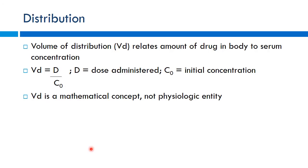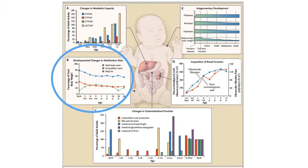Volume of distribution relates the amount of drug in the body to the serum concentration: Vd = dose / initial concentration. This is a mathematical concept, not a true physiologic compartment, but it helps us understand how much drug has been distributed to tissues versus remaining in plasma. In children, total body water is much higher early in life, body fat is lower, and extracellular water is increased — essentially, small children are big bags of water.